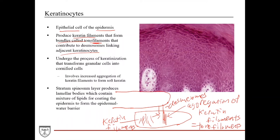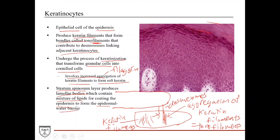Keratinocytes start in the basale layer as stem cells, then ascend through the layers of the epidermis until they reach the cornified layer — a process called keratinization, where granular cells are transformed into cornified cells of the stratum corneum. This involves increased aggregation of keratin aided by filaggrin, forming what's called soft keratin, in comparison to hard keratin found in nails and hair. The stratum spinosum layer also produces lamellar bodies — granules unique to keratinocytes that contain a mixture of lipids responsible for coating the epidermis to form the epidermal water barrier, waterproofing the skin.